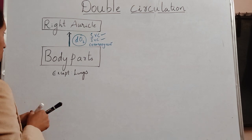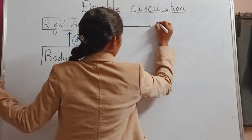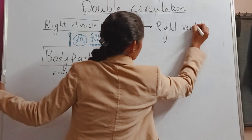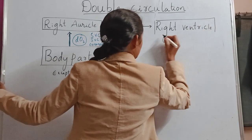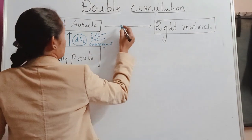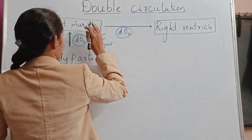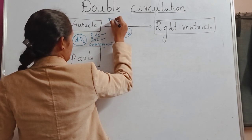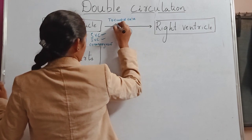Now from the right auricle, the blood will move on to the right ventricle, which is the second chamber of the heart. The deoxygenated blood will move on to the right ventricle. When the right auricle sends the blood to the right ventricle, the tricuspid valve will be opened.